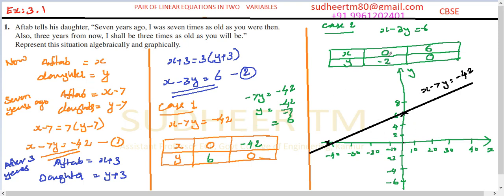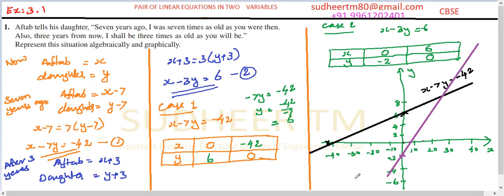For the second line, plot the points (0, −2), which is below the origin on the Y axis, and (6, 0), which is to the right on the X axis. Join these two points. This line represents X minus 3Y equals 6.